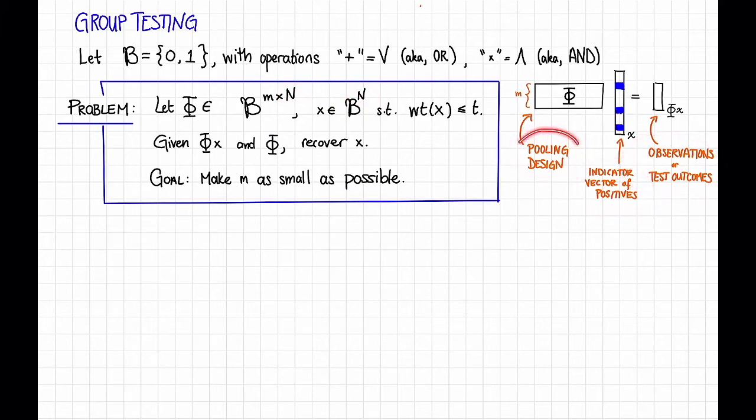In particular, the matrix is now called a pooling design for reasons we'll see in a moment. Okay, so exactly the same problem, but now over this Boolean algebra. Once again, we might ask, why do we care?